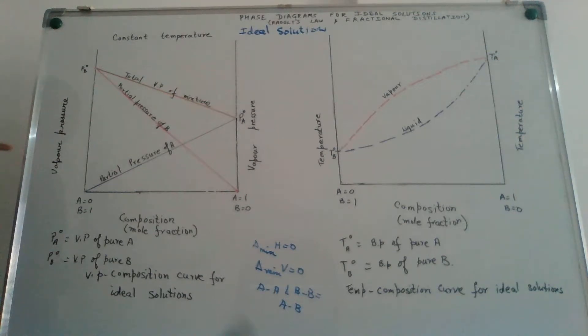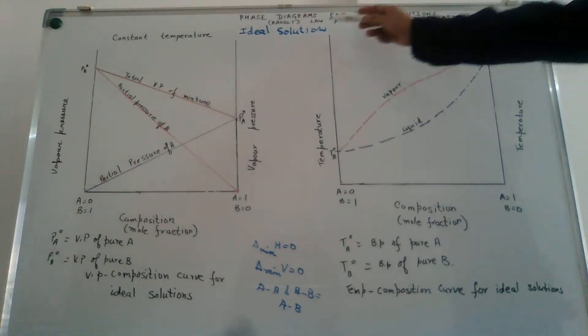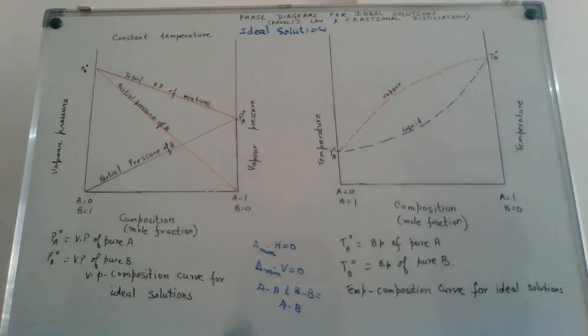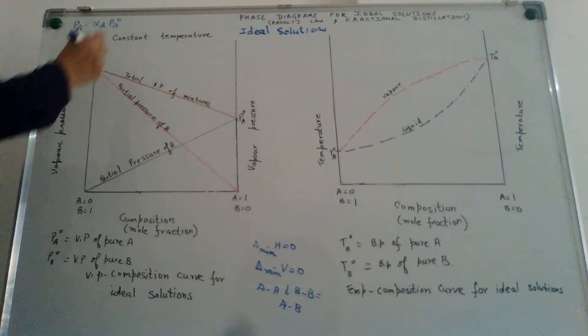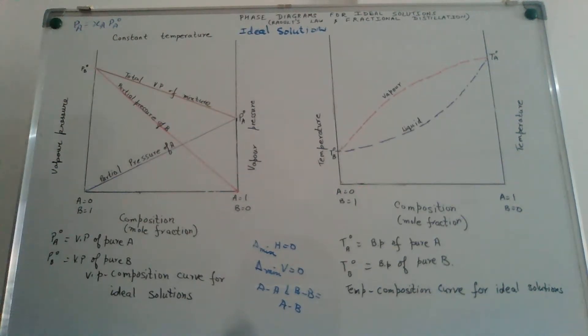Ideal solutions - ideal means obedient, very good, obeying everything to the T. So ideal solutions are those which will obey Raoul's law under all conditions. In Raoul's law, the vapor pressure of a component equals the mole fraction of that component in solution multiplied by the vapor pressure of that component in pure form.